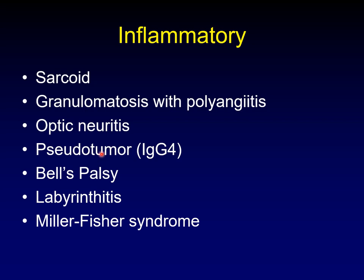Pseudotumor — IgG4-related pseudotumors look very much like optic neuritis. Bell's palsy, we can argue about whether this is really infectious or inflammatory; it doesn't really matter for this discussion. We'll also talk about Miller-Fisher syndrome, which is a variant of Guillain-Barré.